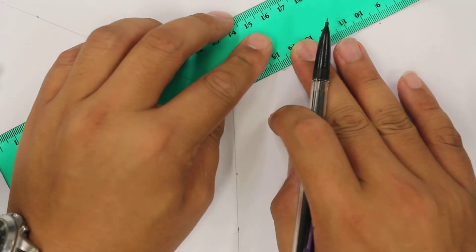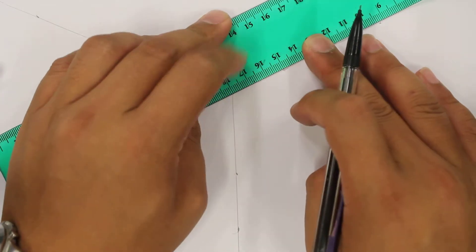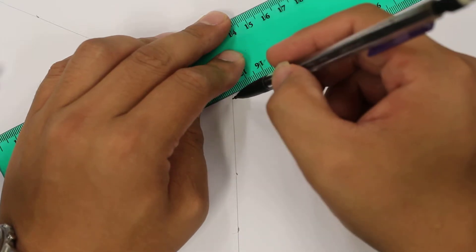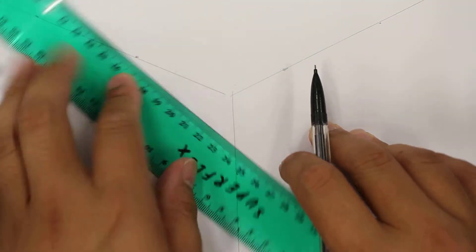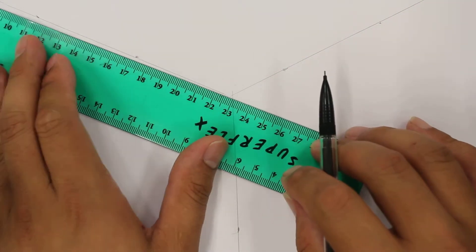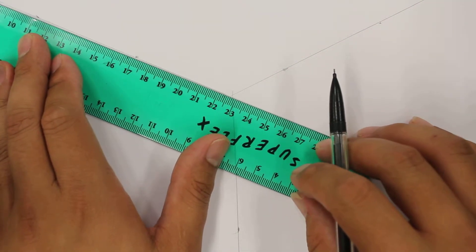What we should see is they all line up to one single point approximately. We would call that point the point of concurrency, so let's see if this gets us to the same place.